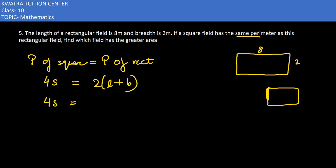Now here L and B, L is 8, B is 2. So 8 plus 2 is 10. 10 into 2 is 20. And left side 4S. What is your value of S? 20 by 4 which is 5 meter.